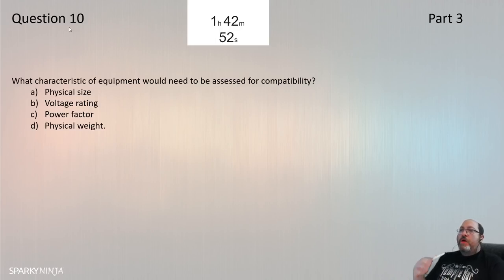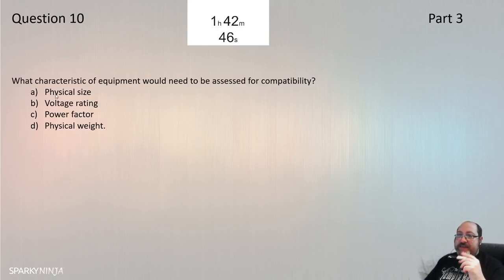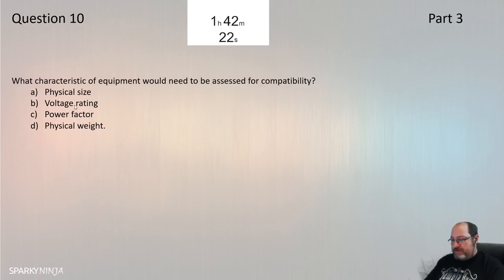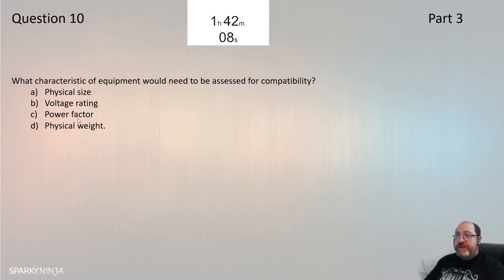Question 10: What characteristic of equipment would need to be assessed for compatibility? The clue 'characteristic' points to Chapter 33 — compatibility. Scanning through 331.1: transient over-voltages, under-voltage, unbalanced loads, rapidly fluctuating loads, starting currents, harmonic currents, earth leakage current, high frequency oscillations, and at the bottom — power factor. Question 10 is C — power factor, from 331.1, 12th item in the list.